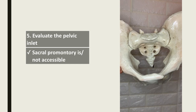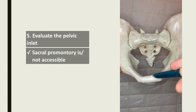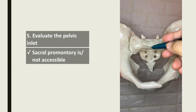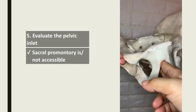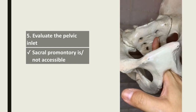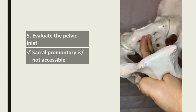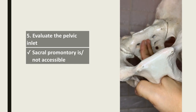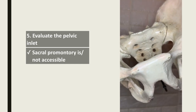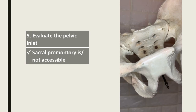We evaluate the pelvic inlet by measuring the diagonal conjugate — inserting two fingers and reaching for the sacral promontory. If the sacral promontory is not accessible, then most likely the pelvic inlet is adequate. However, if your fingers are quite long and you can reach the sacral promontory, determine the diagonal conjugate. If it is more than 11.5 cm, then the pelvic inlet is adequate.